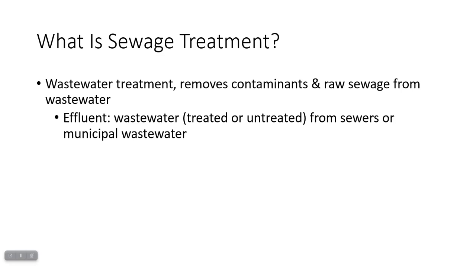Effluent is the wastewater that comes from sewers or municipal wastewater treatment plants. Municipal means city, so these are usually going to be found in areas of higher population density. Effluent can be treated or untreated. Ideally, you want treated effluent ending up in your local rivers, lakes, or streams because then it's not going to produce contamination of the environment and all the other negative consequences we'll talk about in a moment.